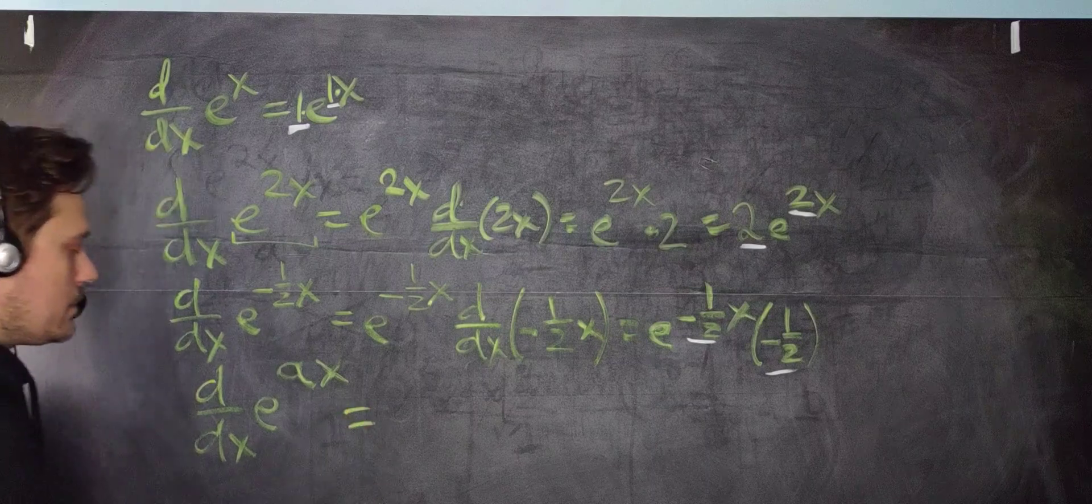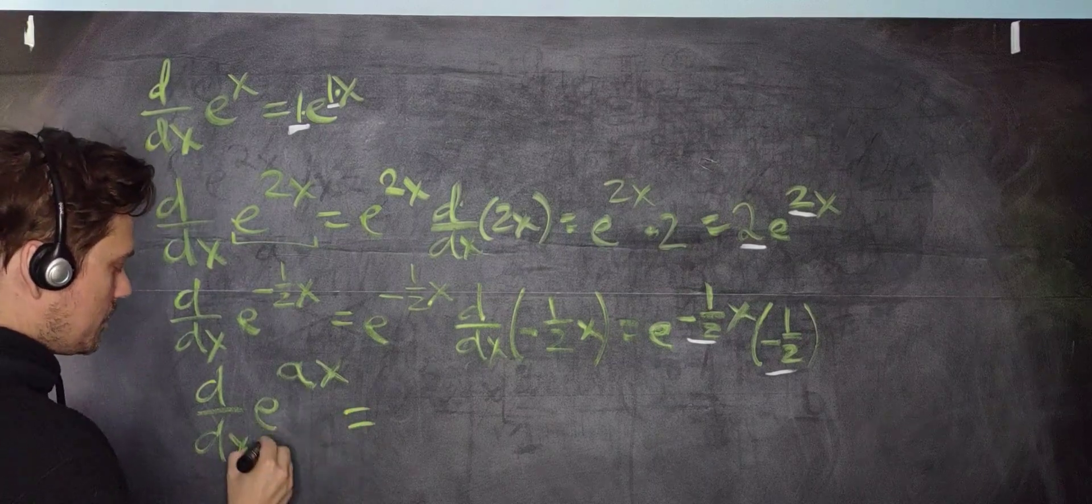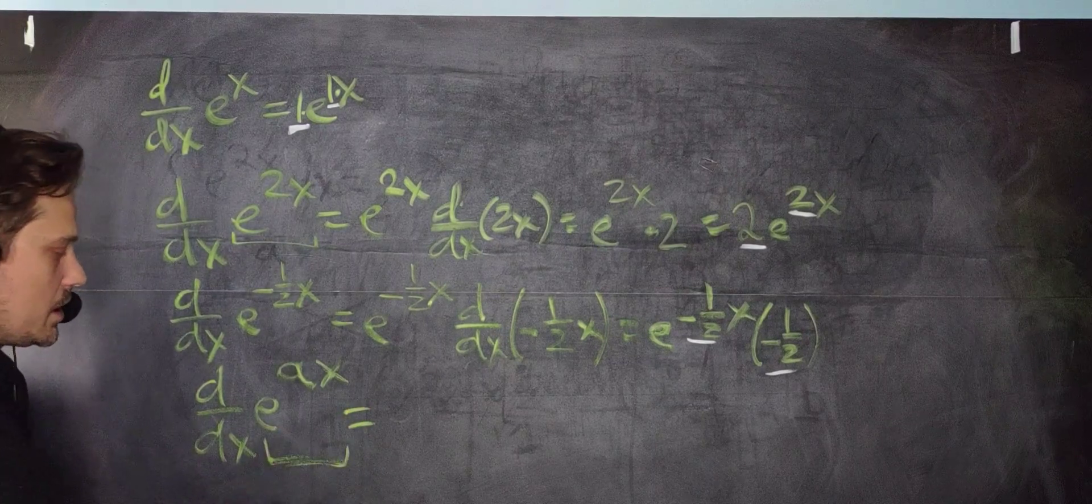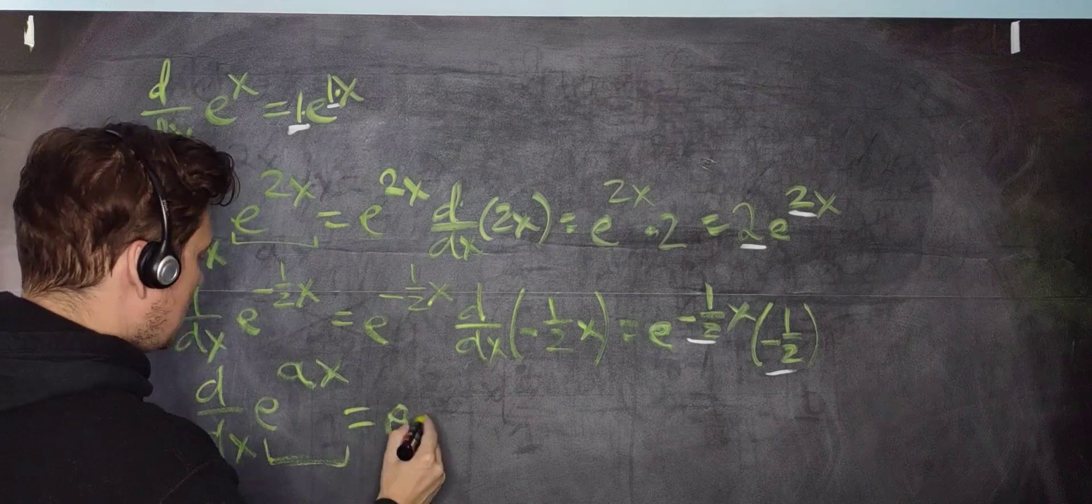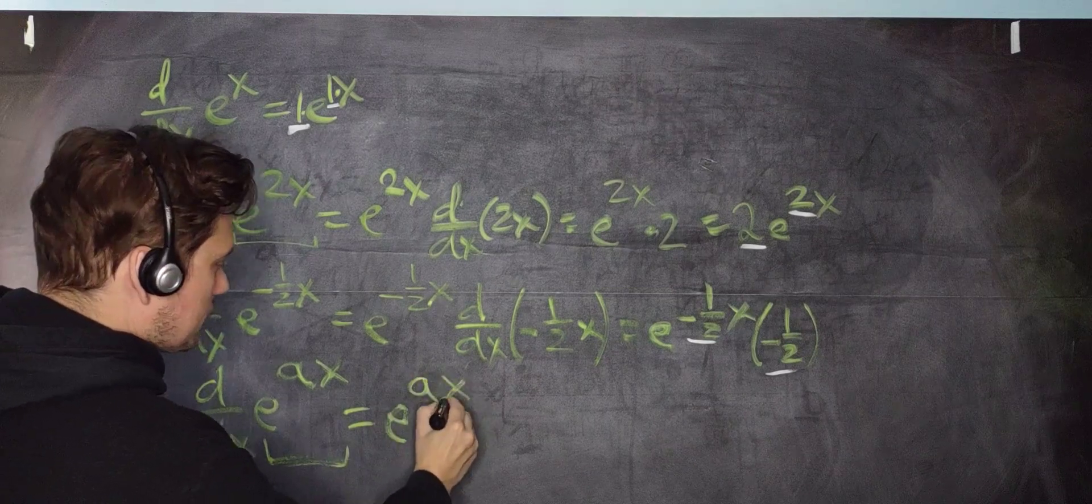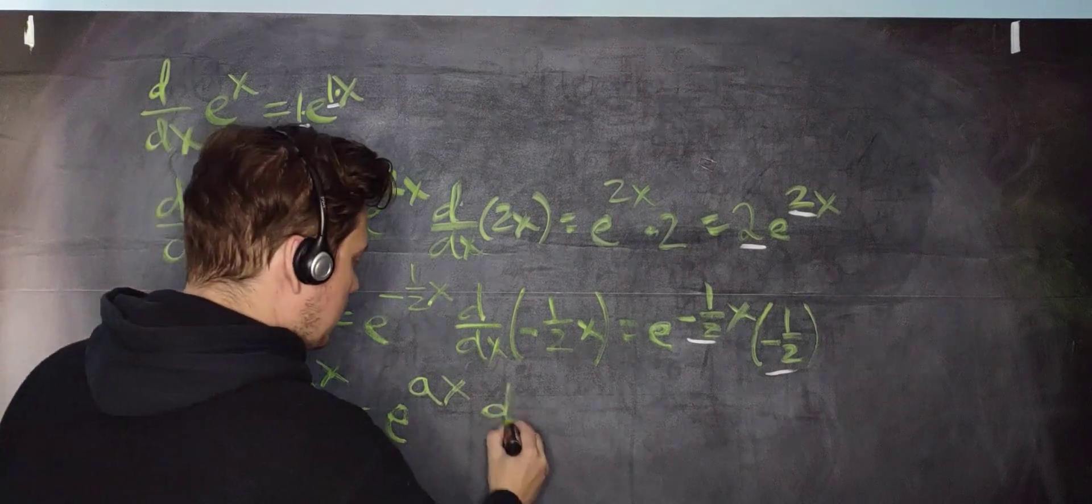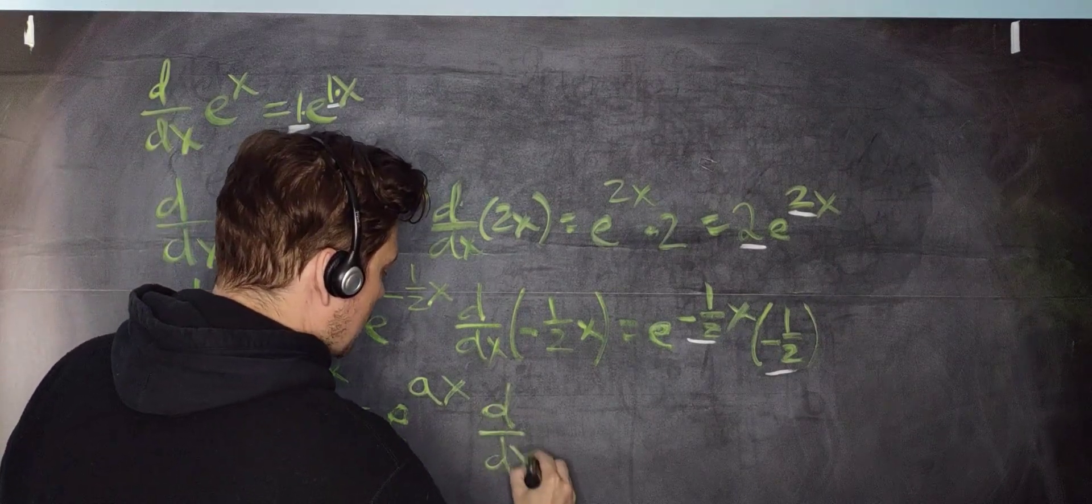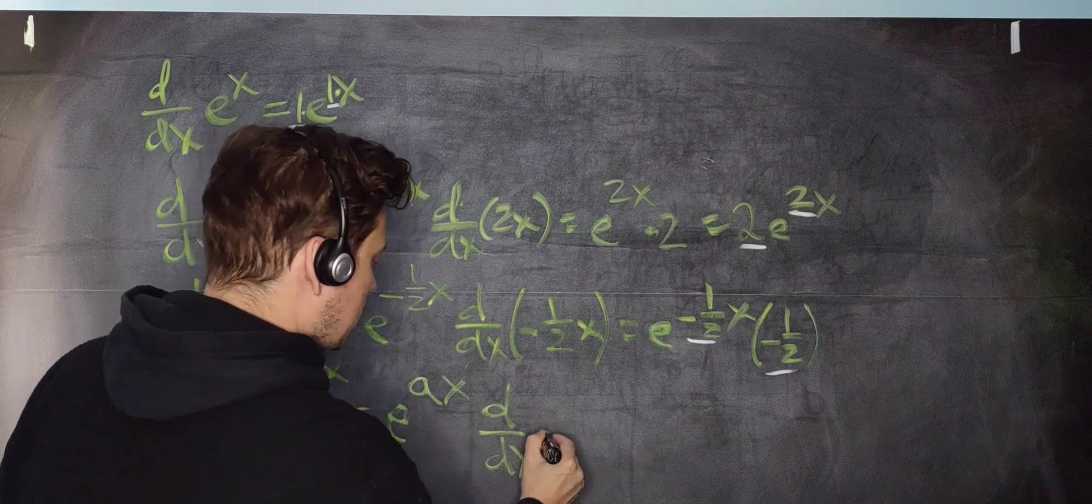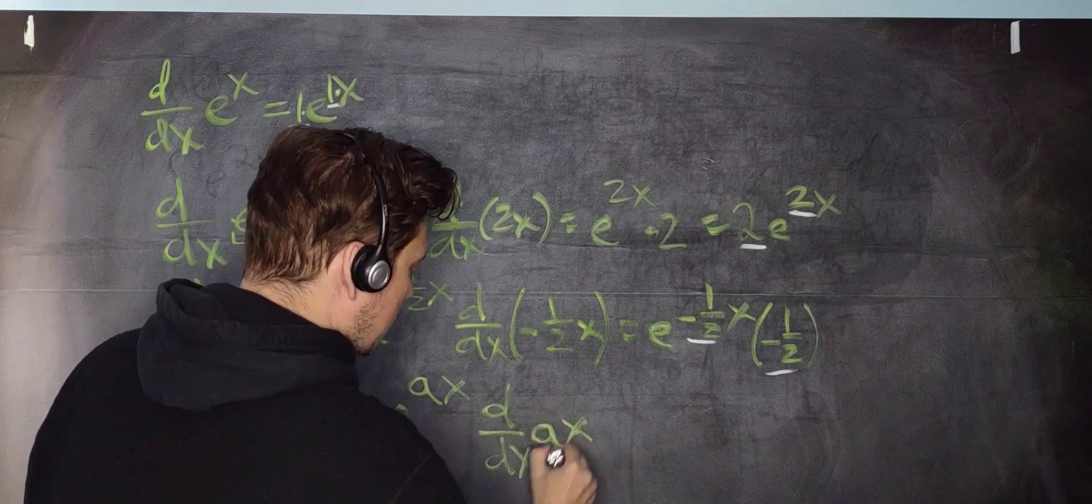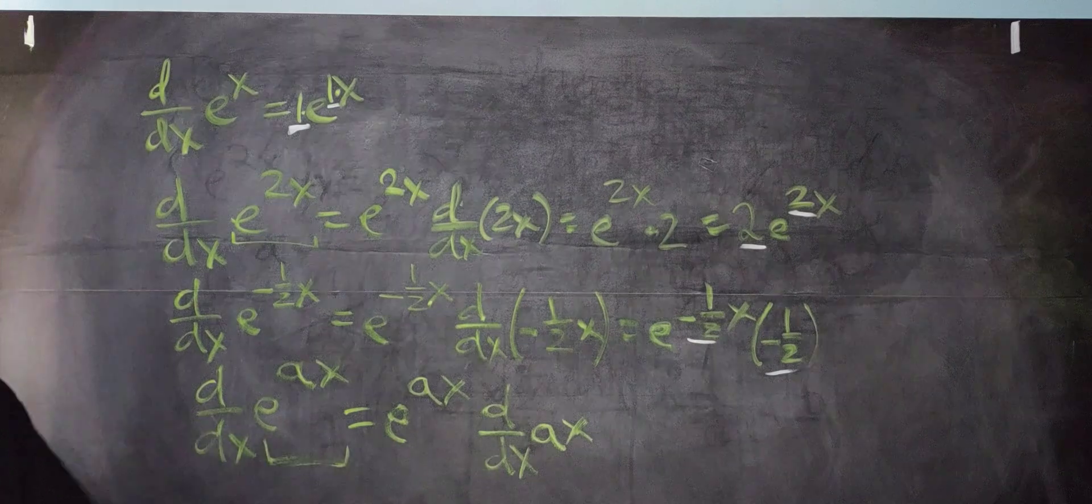Then from that, you can get this nice pattern that tells you you can do this as follows. You're going to copy this part completely unchanged at first. So you're going to copy e to the ax, completely unchanged. And then you multiply by the derivative, like this, with respect to x of ax, whatever the exponent is, together with the a. You multiply by that derivative.